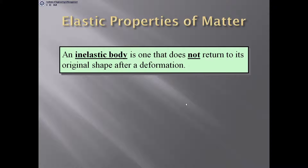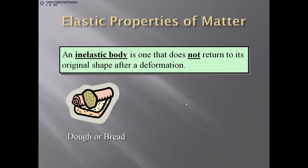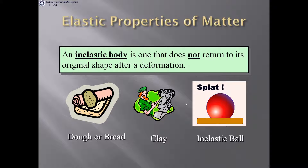An inelastic body is one that does not return to its original shape after a deformation. Examples include bread, clay, or an inelastic ball. In such cases the body is not able to return to its original shape after deformation.